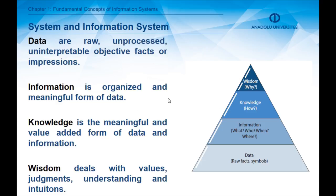The relationships between these four concepts are generally described with a pyramid, as you can see on the right side of the screen, where data is at the bottom and information is on the second level. Information answers the questions of what, who, when, and where. Knowledge answers the question of how. And as the pinnacle of the hierarchy, wisdom answers the more philosophical question: why.